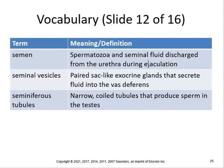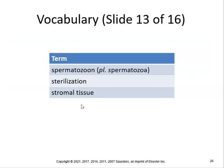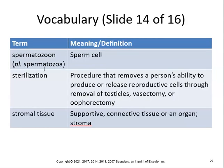Semen is spermatozoa in seminal fluid discharged from the urethra during ejaculation, containing millions of sperm cells. Seminal vesicles are the paired sac-like exocrine glands that secrete fluid into the vas deferens. Seminiferous tubules are the narrow coiled tubules that produce sperm in the testes. Make sure you know the difference between semen, seminal vesicles, and seminiferous tubules.